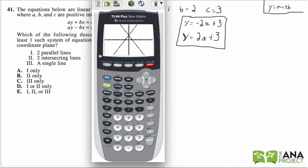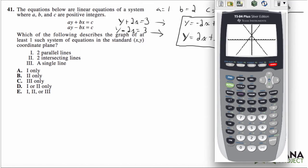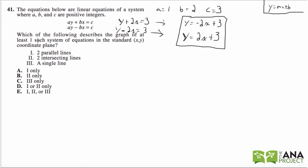So we have two intersecting lines. Are they two parallel lines? No. Is it a single line? Nope. Two intersecting lines? Yes. So it would be roman numeral II only, answer choice B.